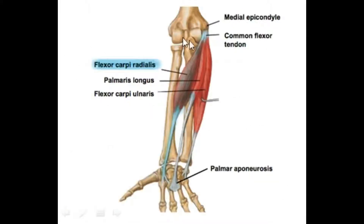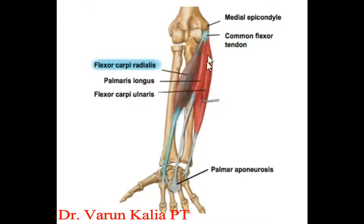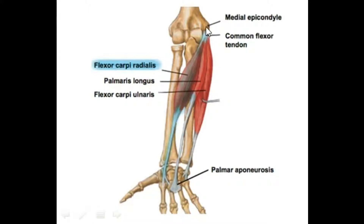इस diagram में आप देख सकते हैं कि here is the medial epicondyle, and just at the front of the medial epicondyle, here is the common flexor tendon। इस common flexor tendon से ही सारी की सारी superficial muscles originate करती हैं। और ये common flexor tendon originate करता है at the point of medial epicondyle, जिसको की हम common flexor origin बोल रहे हैं।